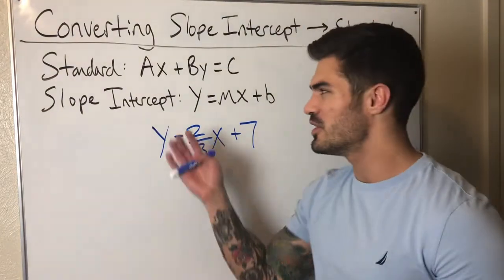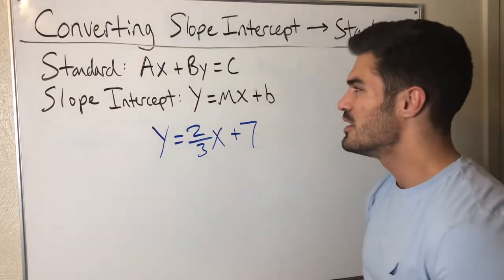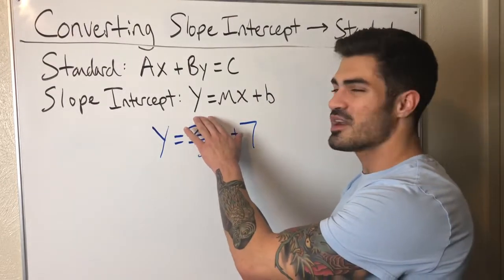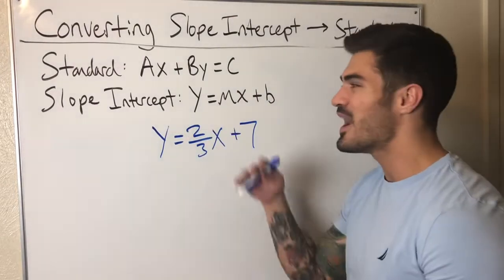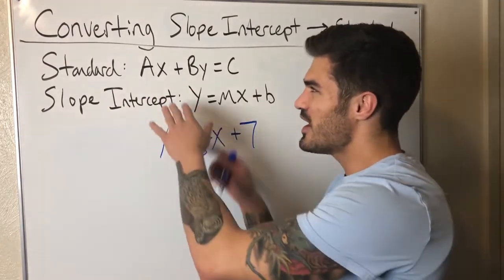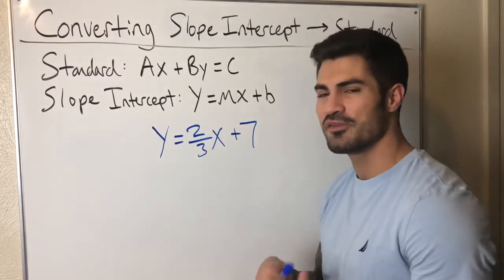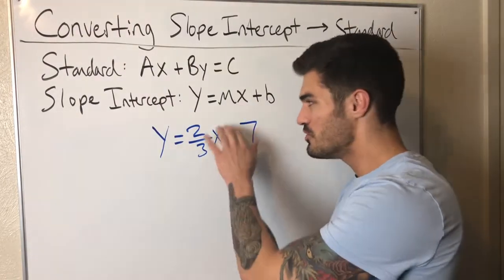So how do we convert an equation, a linear equation, from slope-intercept to standard form? Well, as you can see, slope-intercept, we kind of have y isolated. It's y equals, y is by itself on one side of the equal sign, right? With standard form we have x and y on the same side of the equation. So a good place to start, a good first step, would be to simply move the x.